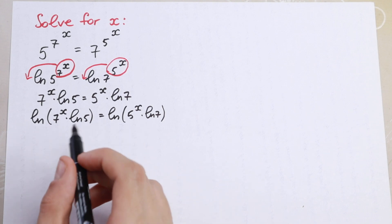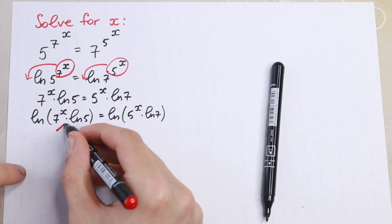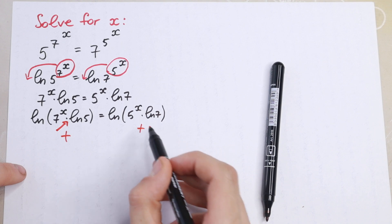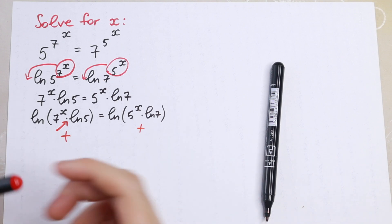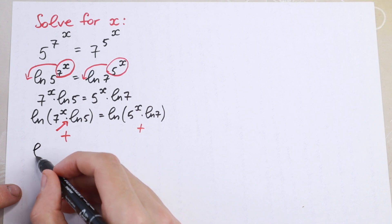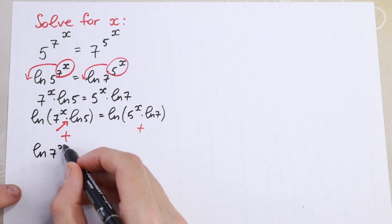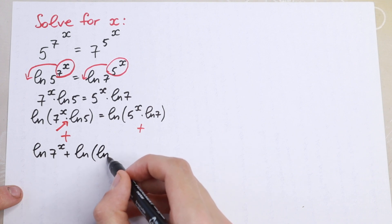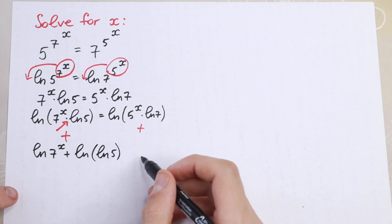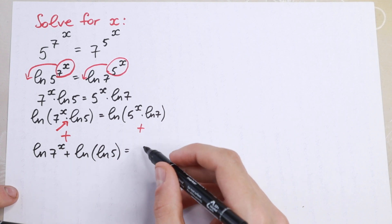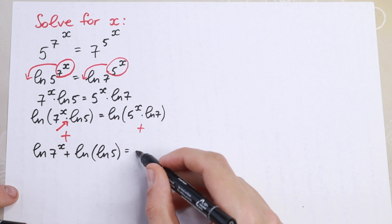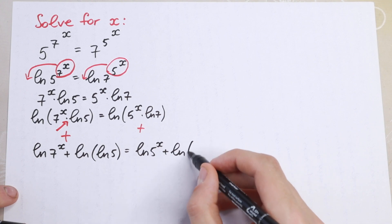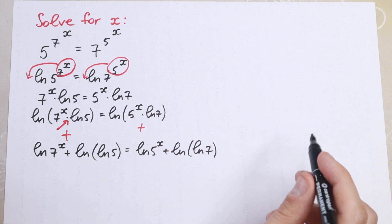We know that if we have a product, we can replace this multiplication with a sum — this is the log property. So we can write the left side as natural log of 7 to the power x plus natural log of natural log 5.